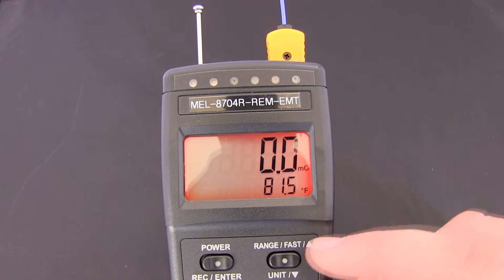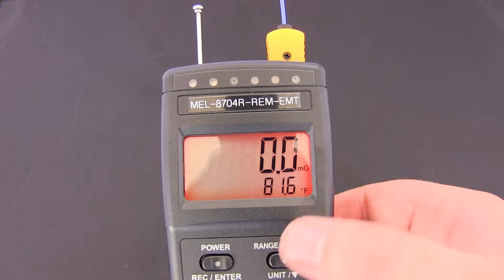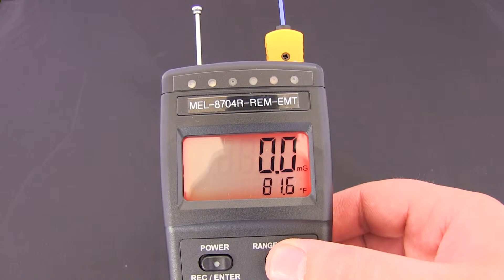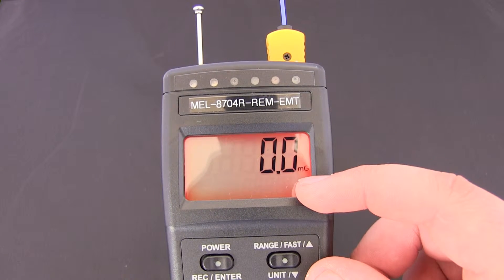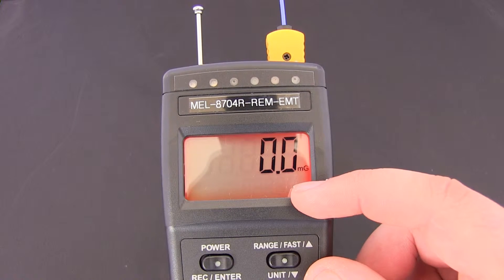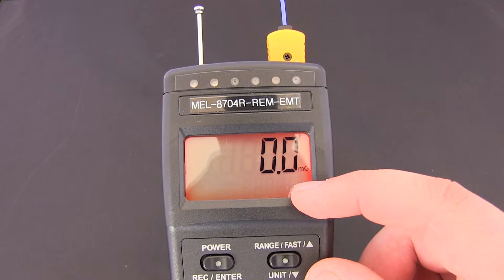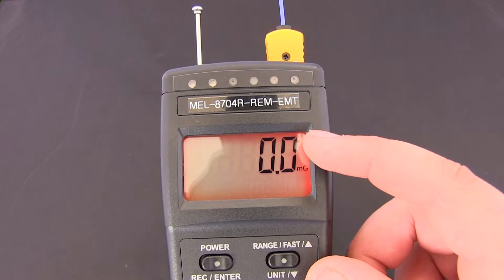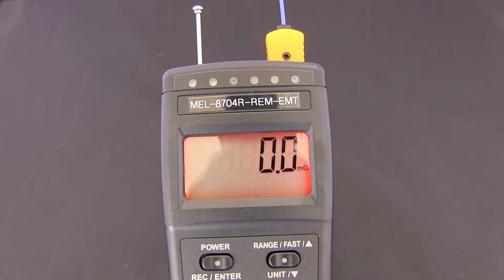If we go ahead guys and we hold the Ranging Fast button, so just this button here. If we go ahead and hold that, it will take away the temperature function here. So we do lose temperature recording, we do lose temperature detection capability as well. However, in doing that it makes the EMF setting on the Mel range go faster and a lot more responsive.